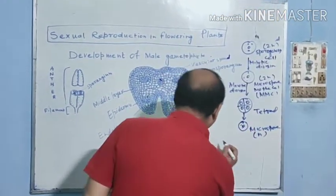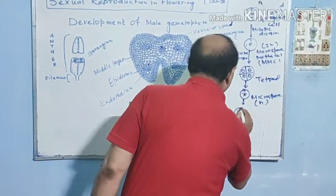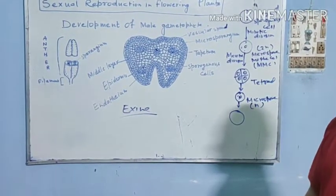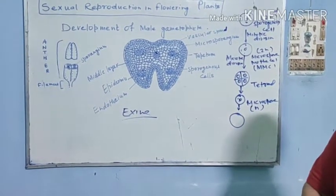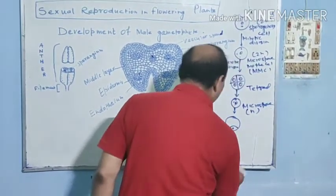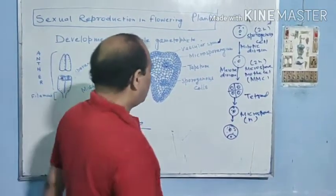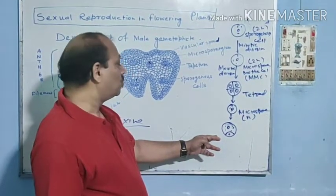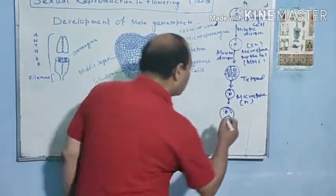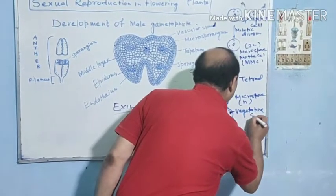The microspore is surrounded by two layers. The nucleus of the microspore divides into two unequal cells by mitosis. This two-cell stage is known as the male gametophyte. The larger cell is known as the vegetative cell and the smaller cell is known as the generative cell.